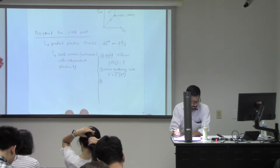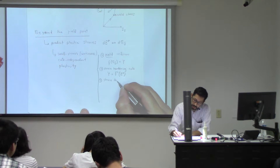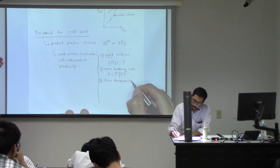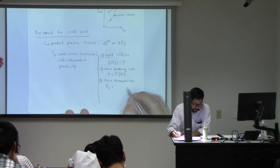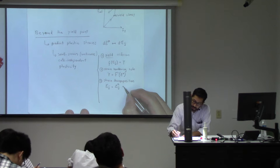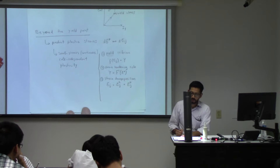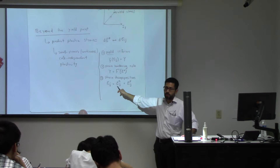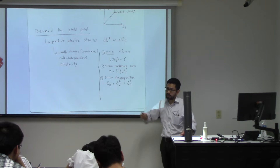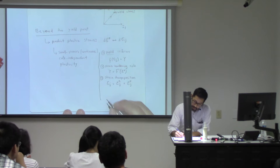The third thing we need, now that we're talking about strains, is to assume that we can do a strain decomposition. What that means is that our total strains are a summation — we can separate them between elastic strains and plastic strains. According to this rule, I can calculate my elastic strains with elastic theory and separately calculate my plastic strains with plasticity theory.